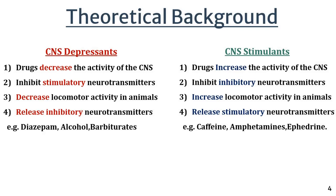Now let us discuss the theory behind the experiment. According to the title, CNS depressants and CNS stimulants are two categories. CNS depressant drugs decrease the activity of the CNS — that is, the brain and spinal cord. CNS stimulant drugs increase the activity of the CNS by inhibiting inhibited neurotransmitters.